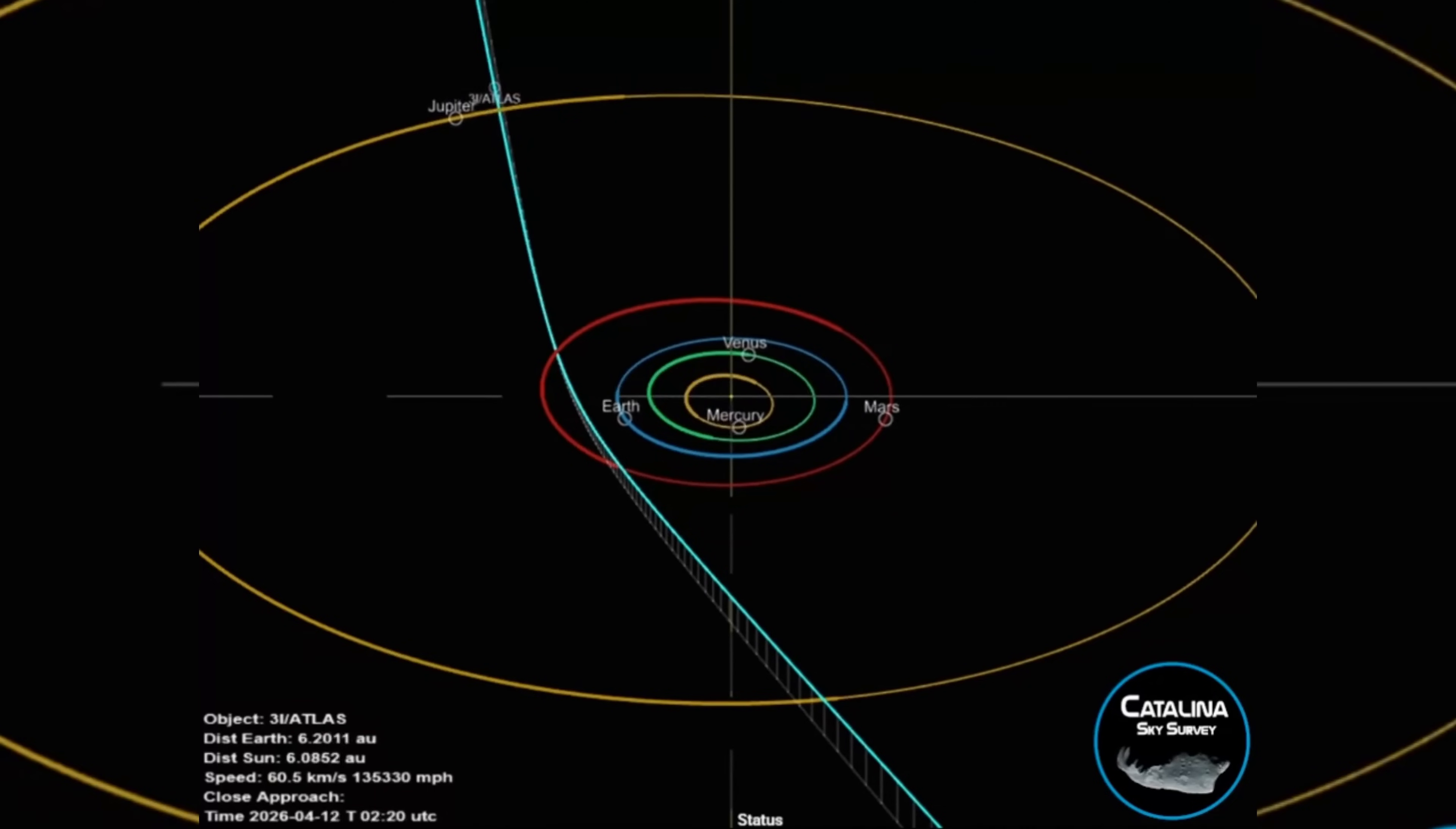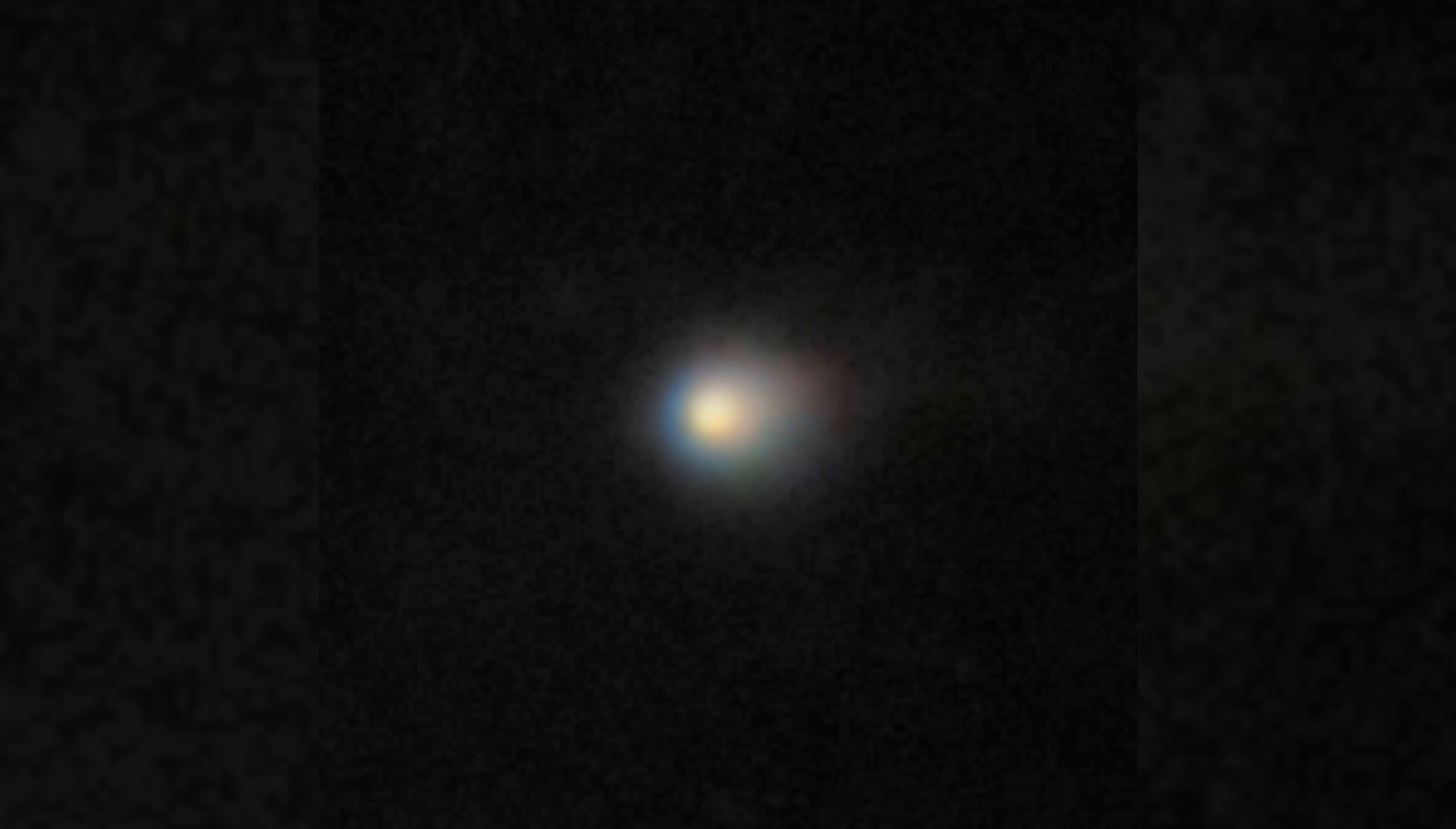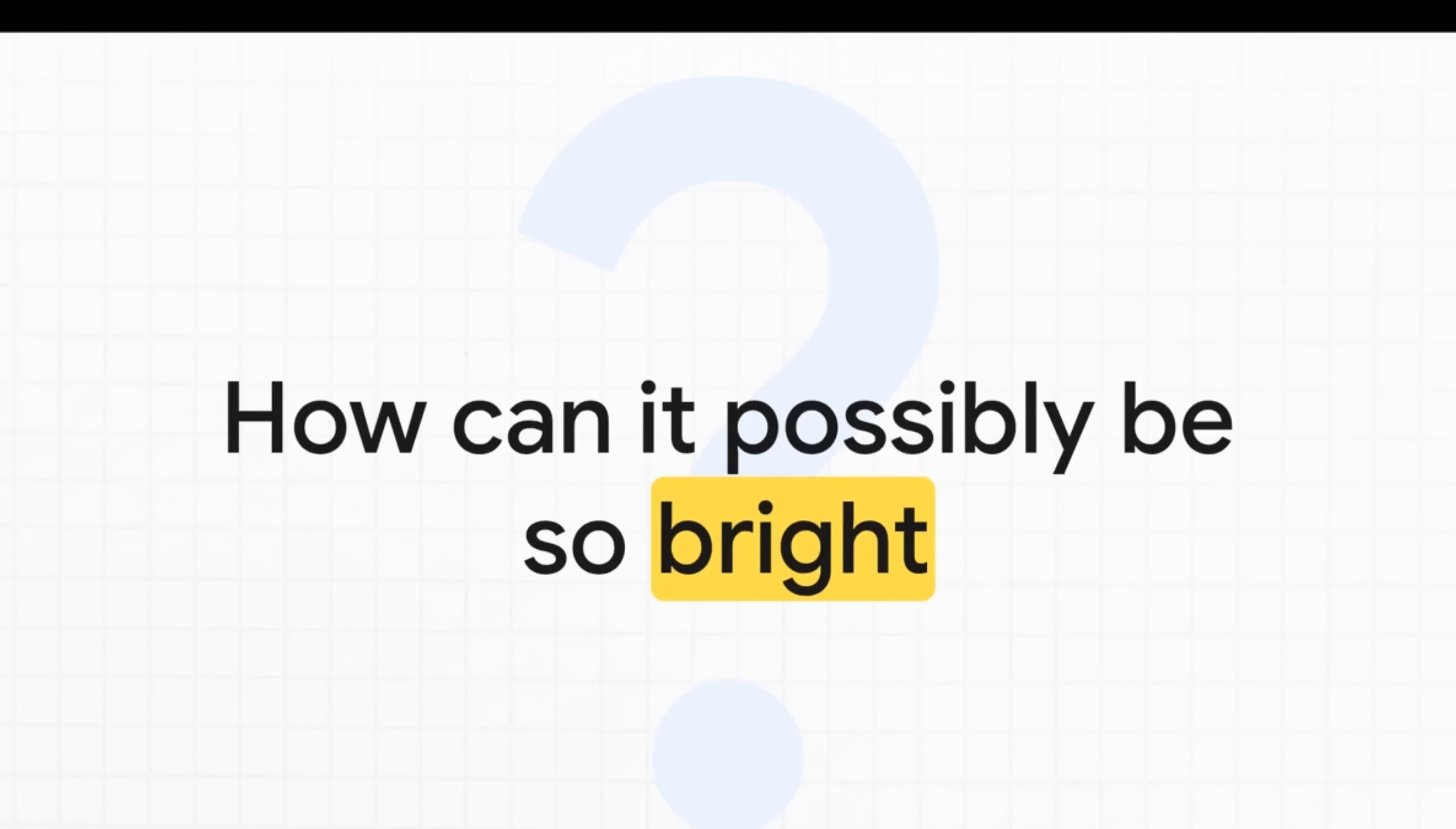The problem wasn't its path through space. It was its appearance. What's really interesting here is that description, fuzzy snowball. That sounds a lot like a comet, right? You've got an icy core, and it's surrounded by a hazy cloud of dust and gas we call a coma. But that simple explanation, that's where the trouble really begins. And this is the big question that astronomers are wrestling with.